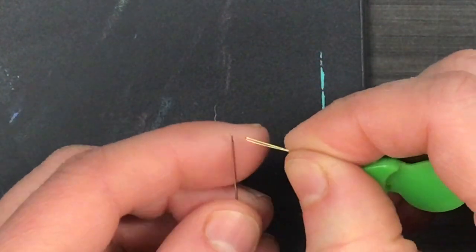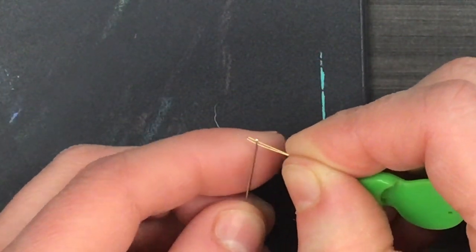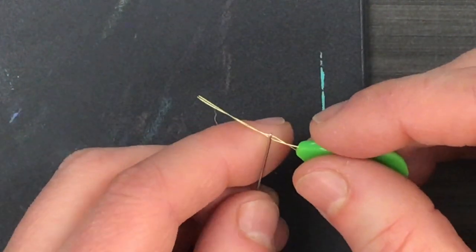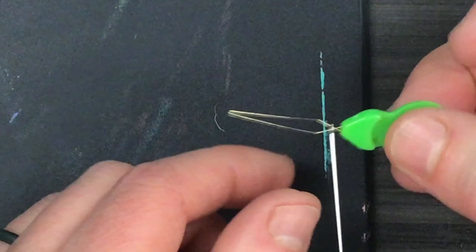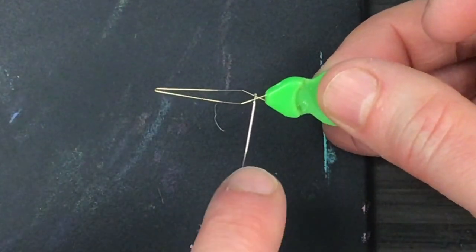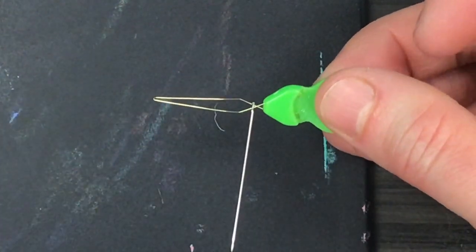The needle threader gets poked through the eye or that hole. Now it's kind of tough, but it's a lot easier with metal than it is with the thread. I push it all the way through so that the metal loop opens back up. My needle is on my needle threader.